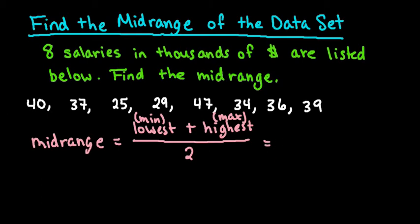So what we're going to do is go through our data set and we're going to find our lowest value and our highest value. So our lowest value is 25 and our highest value is 47. So we would just take 25 plus 47 and divide it by two.